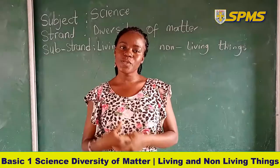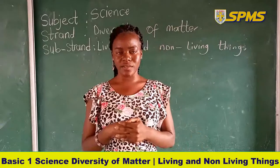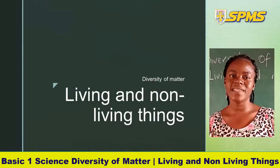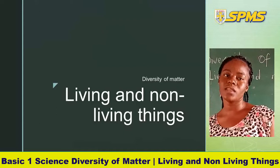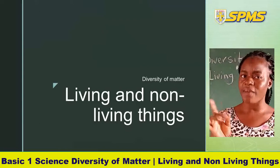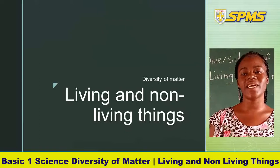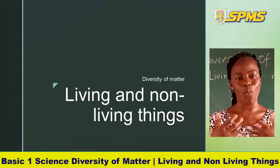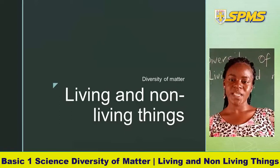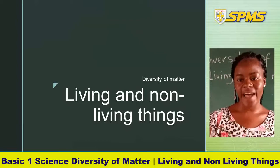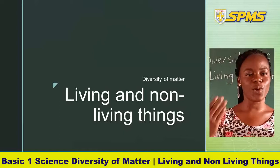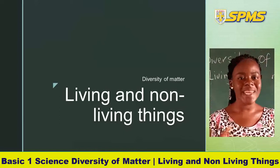Now let's look at the difference between living and non-living things. Living things have life — living things are the opposite of non-living things. Living things have life; non-living things do not have life. Living things give birth to young ones; non-living things do not. Living things survive on water, air, and food; non-living things do not depend on anything to survive.